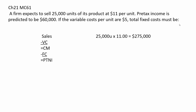If we're going to sell 25,000 units at $11 a piece, that'll be total sales of $275,000. And remember, we're looking for fixed costs. Now we've got one piece of this — sales. It also says that pre-tax income is predicted to be $60,000.